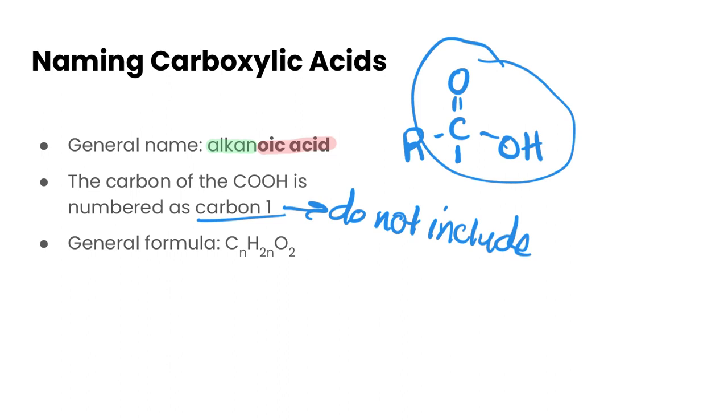You do not need to include the numbers in the name because they are always at carbon one - we prioritize this in the naming, and so it becomes redundant if you include the number in the name. Finally, the general formula is CnH2nO2. This differs just by one oxygen from the aldehydes and the ketones, if you remember, they were CnH2nO. So that's another way for you to come up with general formulas of various different carboxylic acids.